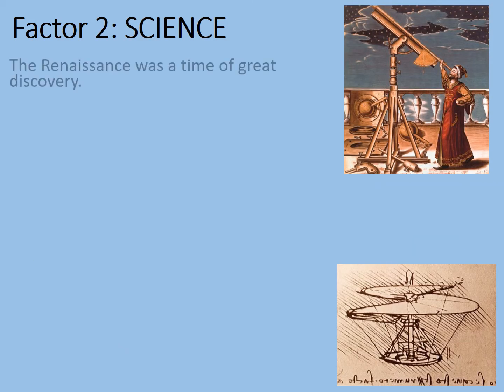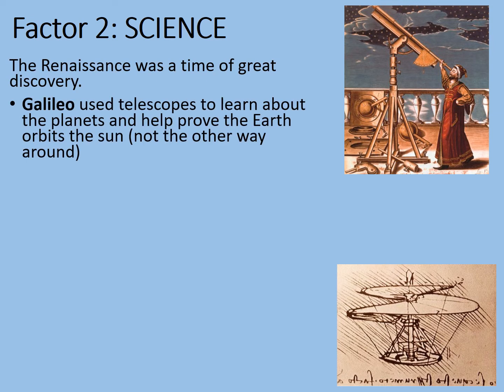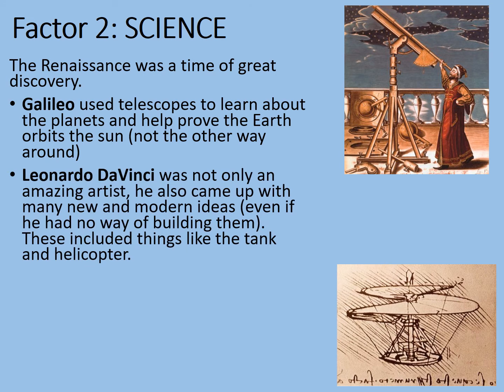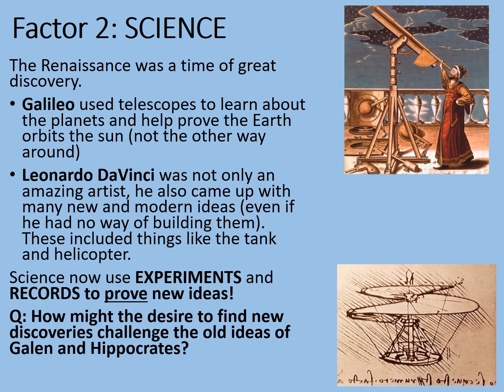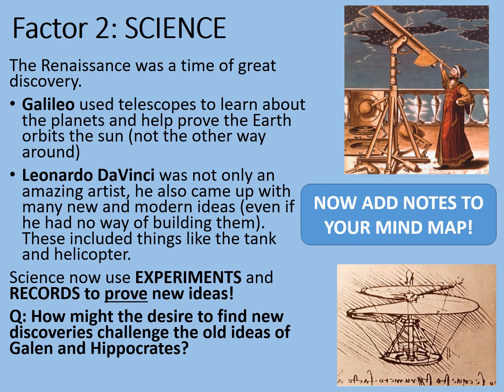Factor number two: science. The Renaissance was a time of great discovery. Galileo used telescopes to learn about the planets and help prove that the Earth orbits the Sun and not the other way around. Leonardo da Vinci was not only an amazing artist — he also came up with many new and modern ideas, including things like the tank and the helicopter, even if he had no real idea of how to build them. Science now used experiments and records to prove, record, and share new ideas. How might the desire to find new discoveries challenge the old ideas of Galen and Hippocrates? Add notes to your mind map and pause the video.